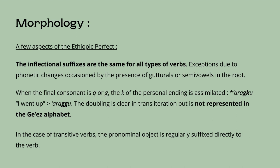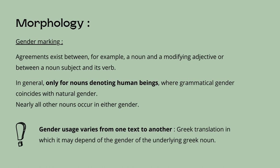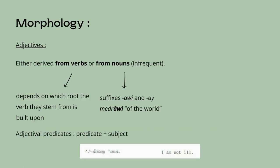Gender marking is present in the agreements between, for example, a noun and a modifying adjective, or between a noun subject and its verb. In general, gender usage is fixed only for nouns denoting human beings, where grammatical gender coincides with natural gender. Nearly all other nouns occur in either gender. It's important to note that gender usage varies from one text to another — for example, in Greek translations, it may depend on the gender of the underlying Greek noun. Most adjectives are derived from verbs, and only a few are derived from nouns by the addition of the suffixes -awi and -ai, denoting 'of' or 'pertinent to,' such as medrawi, meaning 'of the world.'